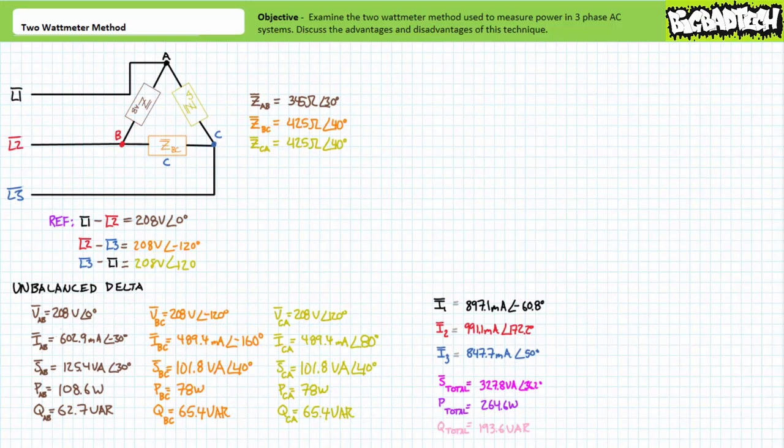Finally, for the unbalanced delta configuration, each load impedance still directly experiences the larger line-to-line voltage. Load current magnitude and relative phase shift for each load is proportional to an Ohm's law manipulation, as is power for each individual load. In the unbalanced condition, line currents are also different. Total apparent, total real, and total reactive power is the summation of individual apparent, real, and reactive power figures. For delta configuration calculations, it's a recommended practice to reference everything with respect to one of the line-to-line voltages — in this case, L1/L2 at 208 volts at an angle of zero degrees. If you reference with respect to one of the line-to-neutral voltages, you'd have to shift these results by positive 30 degrees counterclockwise.